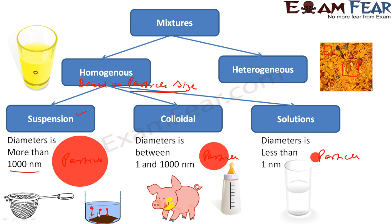These are suspensions, and they can be both homogeneous or heterogeneous. Once suspended it is heterogeneous, because if you take a sample from here and a sample from there it will be different. A suspension is something which has a diameter of more than 1000 nanometers. Since the particle size is large, even if you create a homogeneous mixture, after some time it will settle down. You can use a normal filter because the particle sizes are big — all the particles will remain in the filter and water will come down. So you can easily separate them using a normal filter.